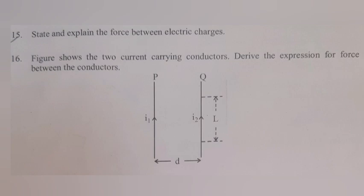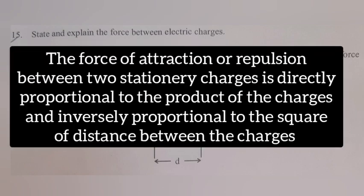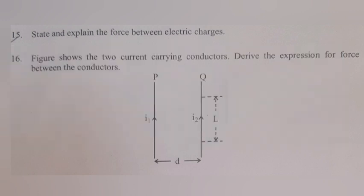Question 15: State and explain the force between electric charges. Answer: The force of attraction or repulsion between two stationary charges is directly proportional to the product of the charges and inversely proportional to the square of distance between the charges. F is directly proportional to Q₁Q₂. F equals 1 by 4πε₀ Q₁Q₂ by R squared.